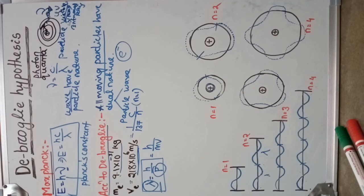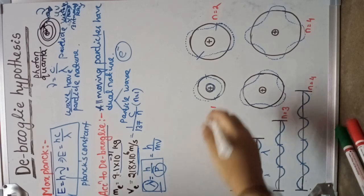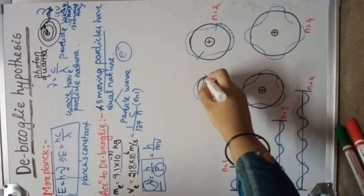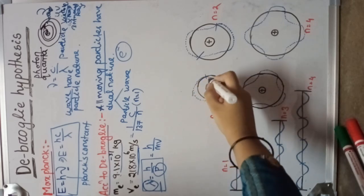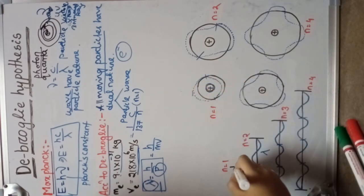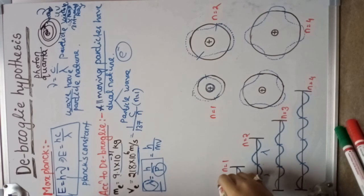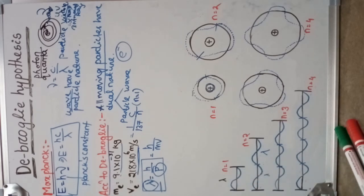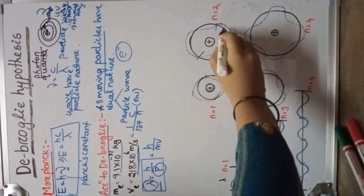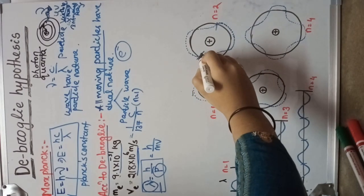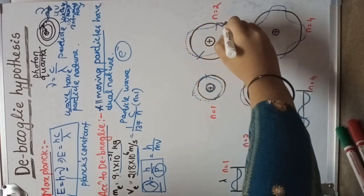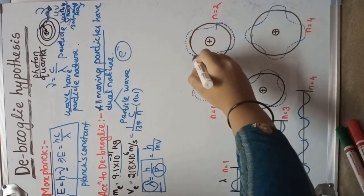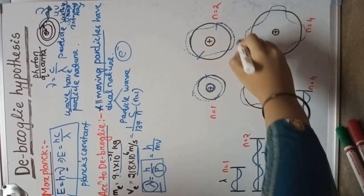As the electron moves around the nucleus, in the first orbit it exhibits one single wave with wavelength lambda. In the case of the second orbit, it exhibits two waves — the first one and the second one — so the total wavelength is two lambda.